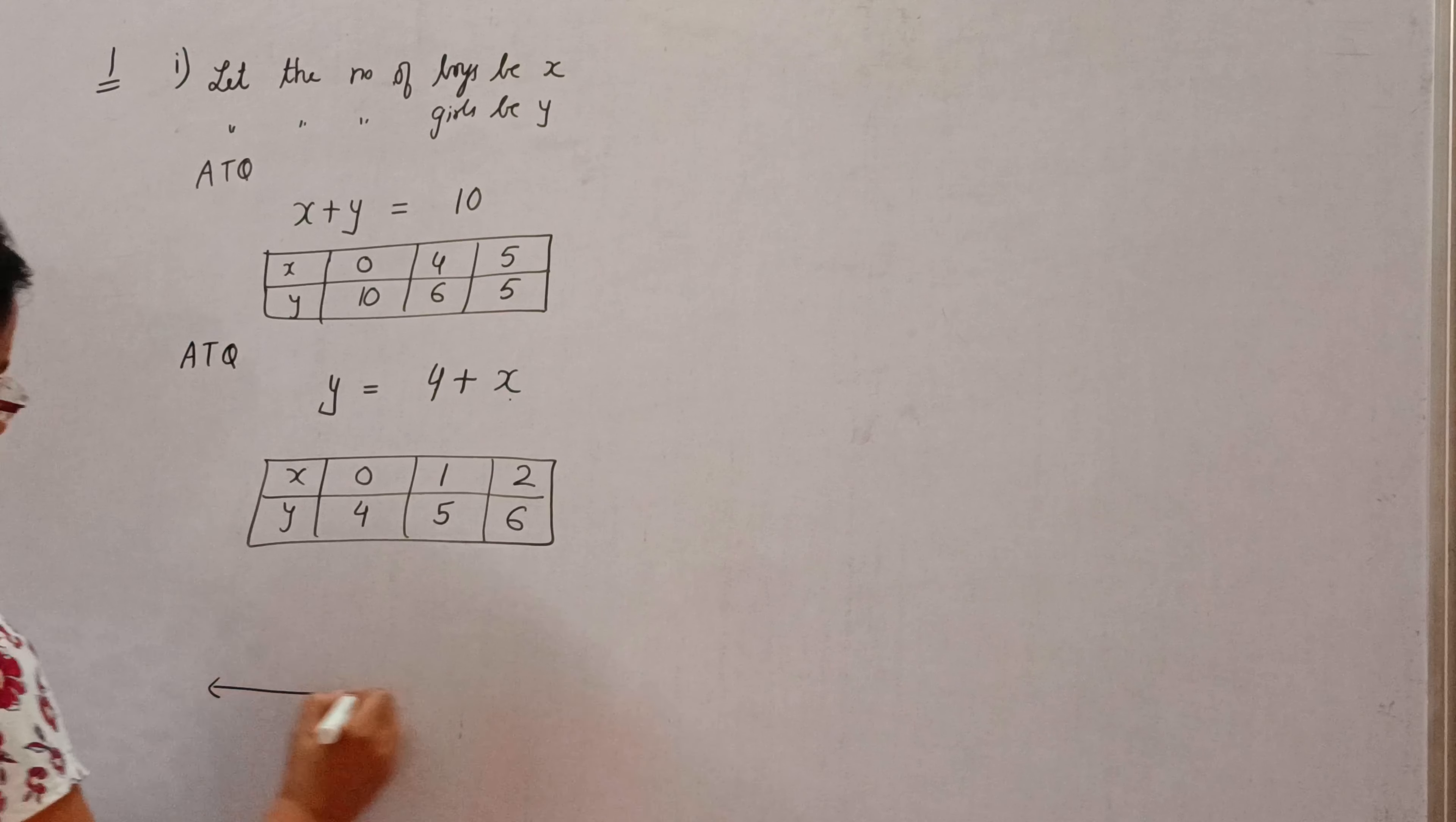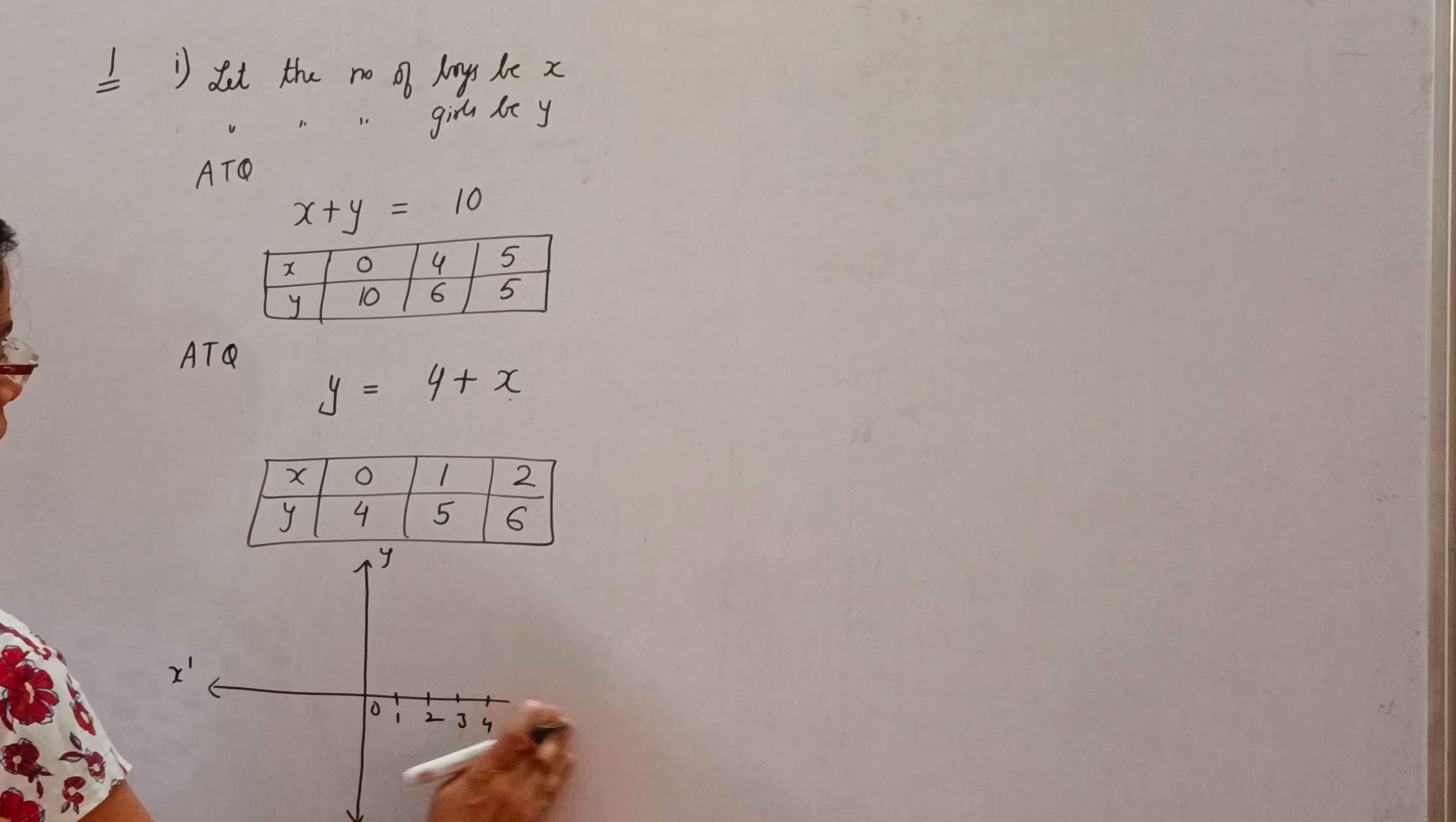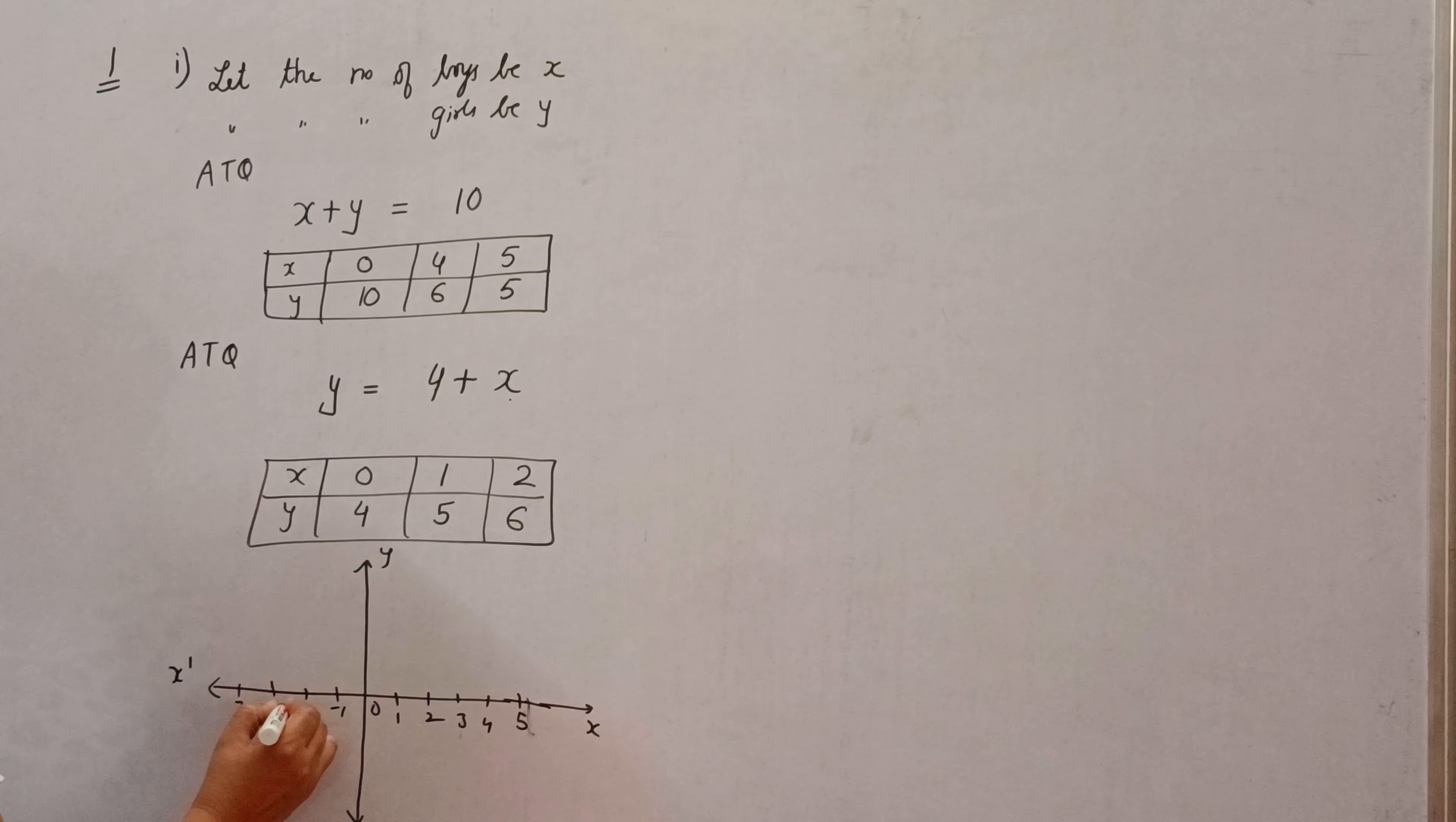So, in short I am telling you how to draw. x, x dash, y, y dash. 1, 2, 3, 4 and 5. Minus 1, minus 2, minus 3, minus 4. 1, 2, 3, 4, 5, 6. Minus 1, minus 2, minus 3, minus 4.